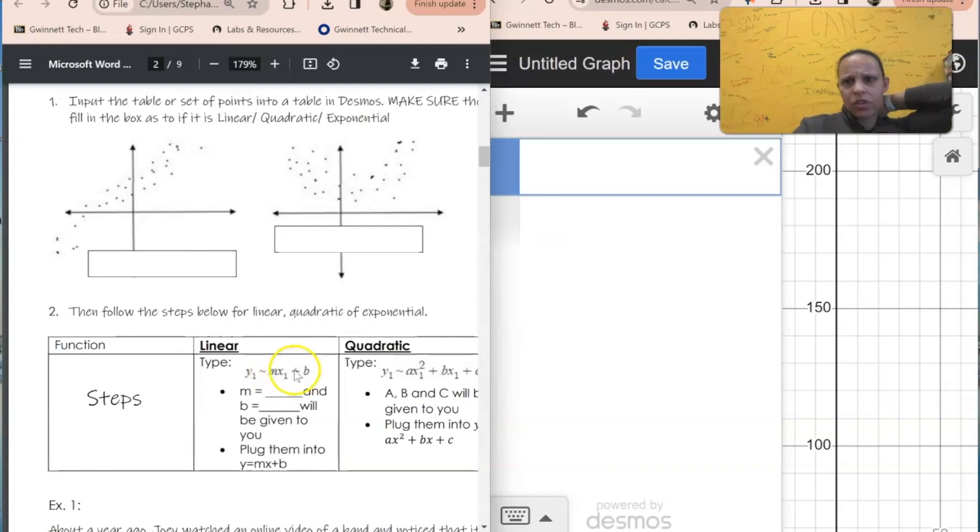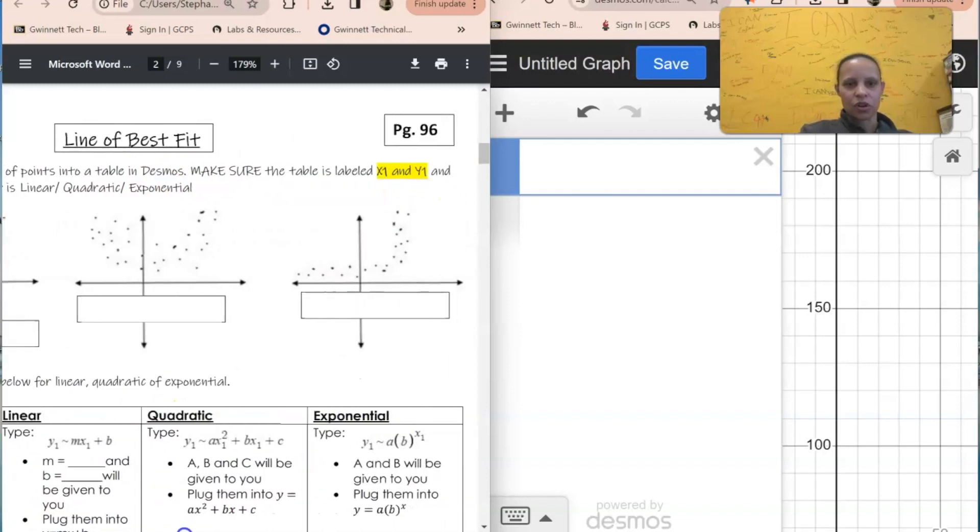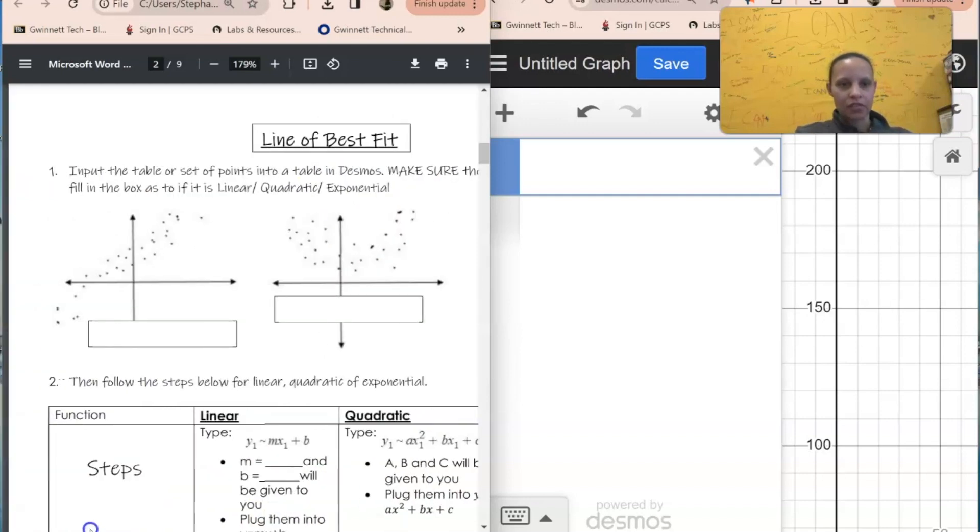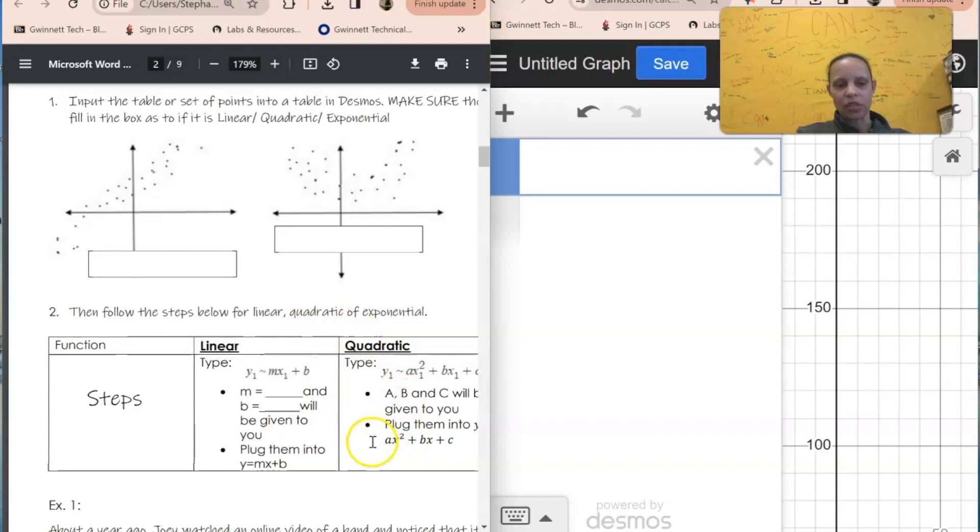It says input the table or sets of points in the table in Desmos. Make sure the table is labeled again x1, y1 - we talked about that - and fill in the box as to if it is linear, quadratic, or exponential based on how it looks. Then follow the steps below like we did in a previous video.